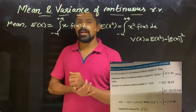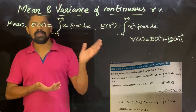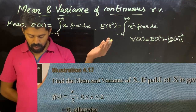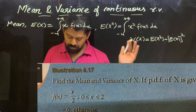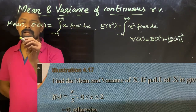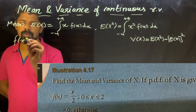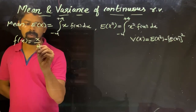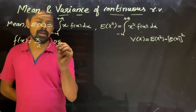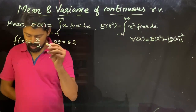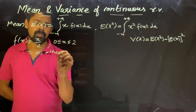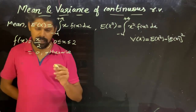So the example we will find here is the question: find the mean and variance of x if f(x) is given by f(x) = x/2, where x has values from 0 to 2, and zero otherwise.